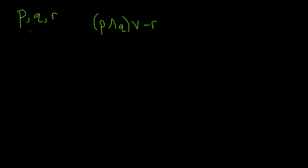We have three statement variables: P, Q, and R. We're going to construct a truth table for this statement. To do that, we'll start by writing down all of the possible truth values that we can have — P, Q, and R. Then we need to take this statement and break it down into simpler statements.